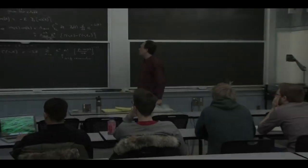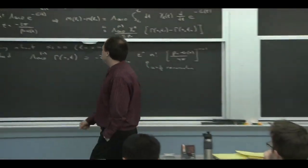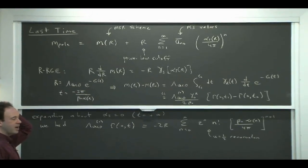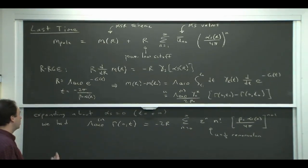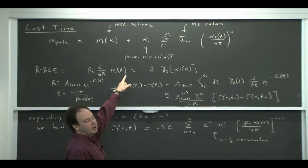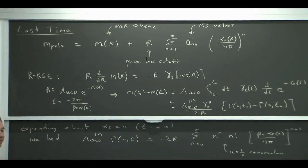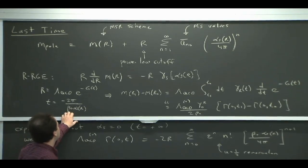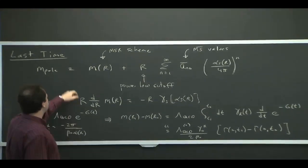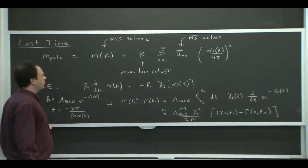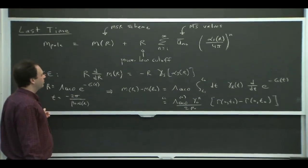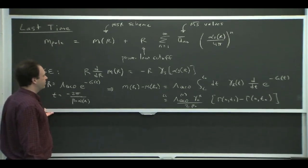Last time we were talking about the MSBAR scheme and renormalons. We said that we could introduce a mass scheme that has an arbitrary power law cutoff, which we called R, to distinguish it from mu or lambda or some other cutoff. The idea of this scheme was to have a nice way of perturbing away from the pole mass to get rid of the renormalon problem that the pole mass has, but retain all the nice features of MSBAR.